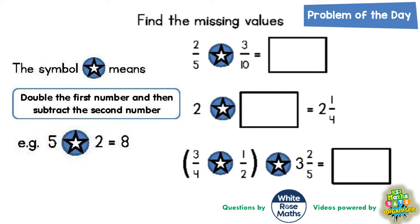It says the symbol star means double the first number and then subtract the second number. For example, 5 star 2 equals 8.